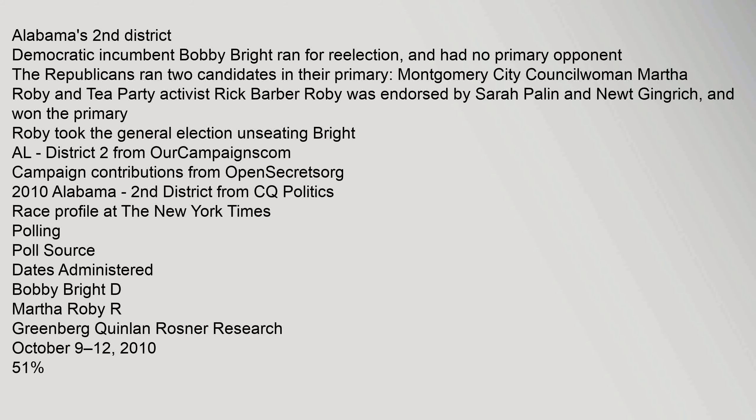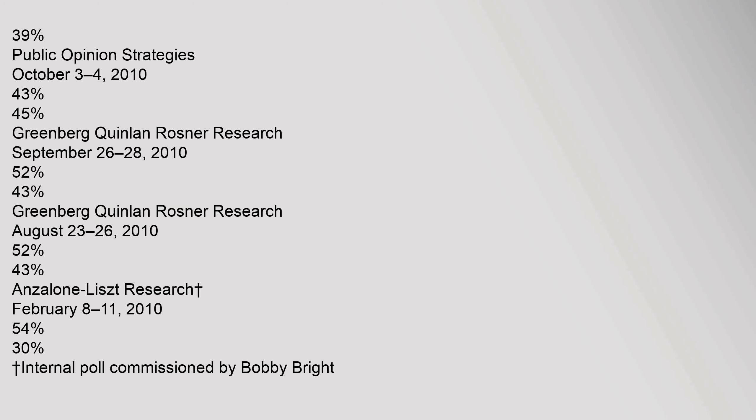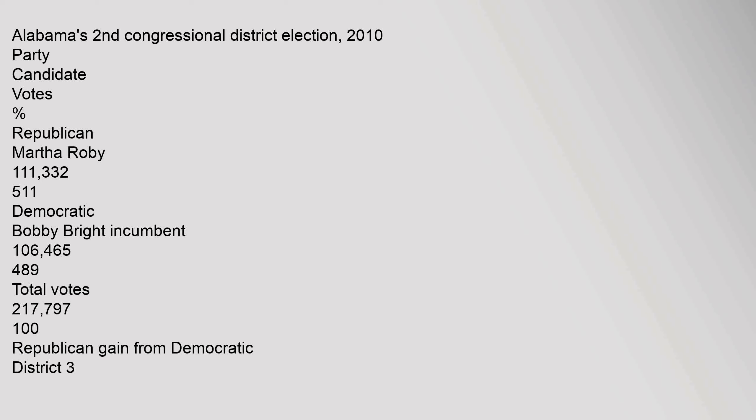Polling for District 2 — Bobby Bright (D) vs. Martha Roby (R): Greenberg Quinlan-Rosner Research, October 9–12, 2010: Bright 51%, Roby 39%. Public Opinion Strategies, October 3–4, 2010: Bright 43%, Roby 45%. Greenberg-Quinlan-Rosner Research, September 26–28, 2010: Bright 52%, Roby 43%. Greenberg-Quinlan-Rosner Research, August 23–26, 2010: Bright 52%, Roby 43%. Anzalone List Research, February 8–11, 2010: Bright 54%, Roby 30% (internal poll commissioned by Bobby Bright). Final result: Martha Roby (Republican) 111,332 votes, 51.1%; Bobby Bright (Democrat, Incumbent) 106,465 votes, 48.9%. Total votes: 217,797. Republican gain from Democratic.